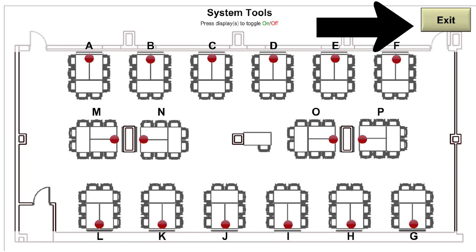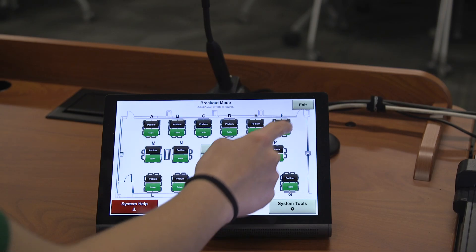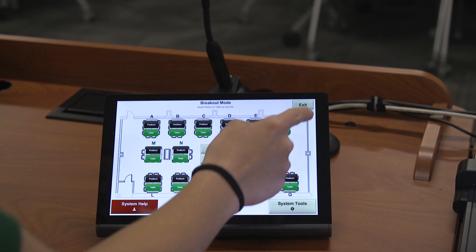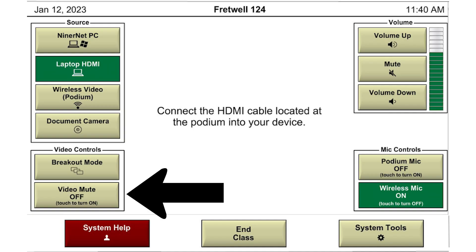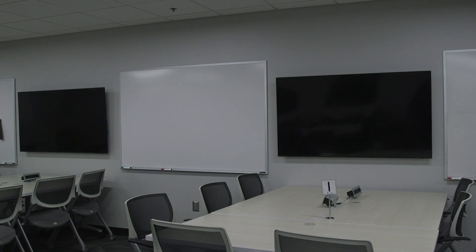To exit this screen, you can press the exit button in the top right corner of the screen. This will take you back to the main menu. The last button on this list is video mute. This hides what is on the podium computer from the displays around the room.